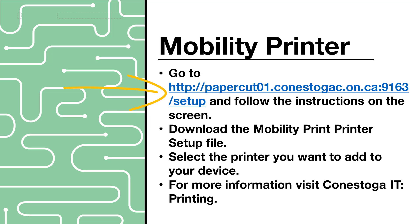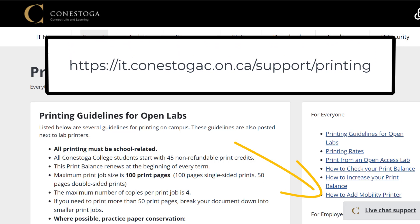More on the mobility printer. Go to this website and follow the instructions on the screen. Download the mobility printer setup file. Once you have gone through the setup, select the printer you want to add to your device. From then, you'll be able to print to that printer. For more information, visit Conestoga IT printing and how to add the mobility printer.